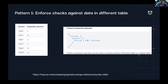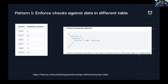Now we start the real agenda — looking at a few interesting patterns. The first is enforcing checks against data in a different table. If you've seen column comparison operators like column equality, column not equal, CGT (column greater than), and so on — before version two, these operators were supported only on the same table. But from version two onwards, we enhanced that and you can do column comparison across different tables.